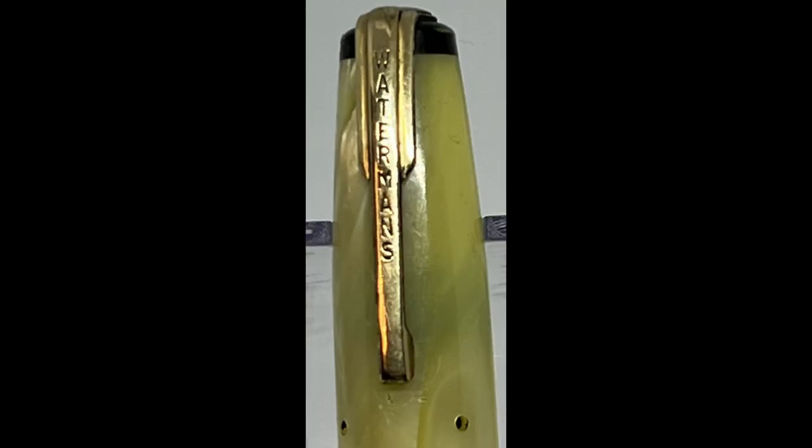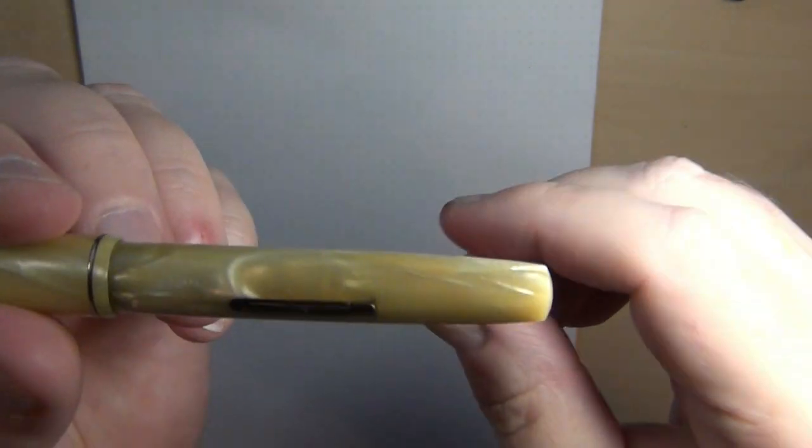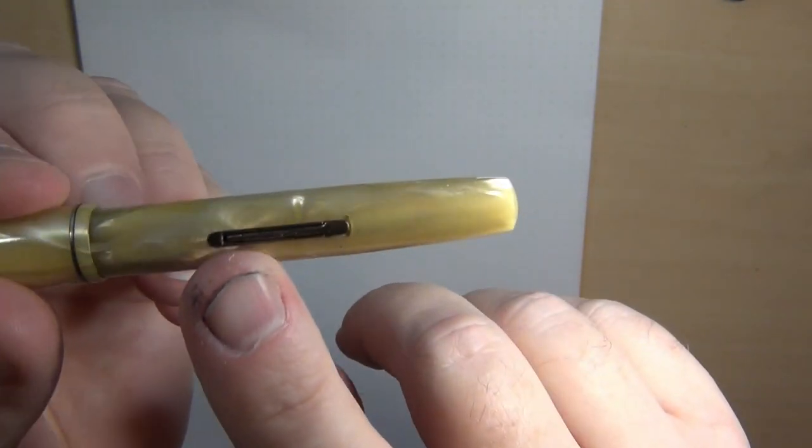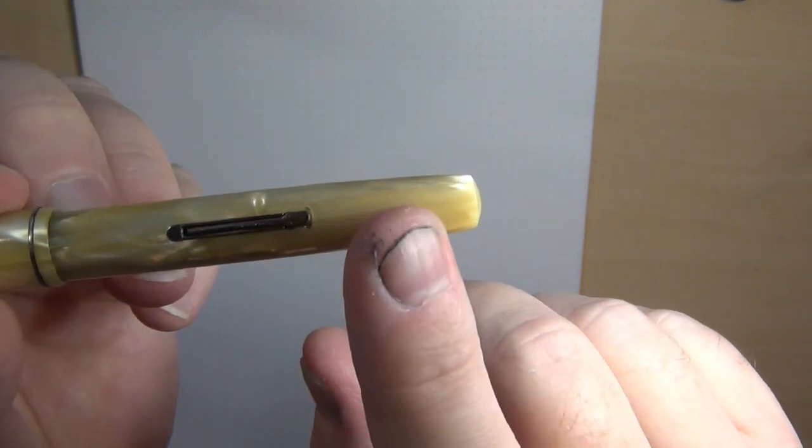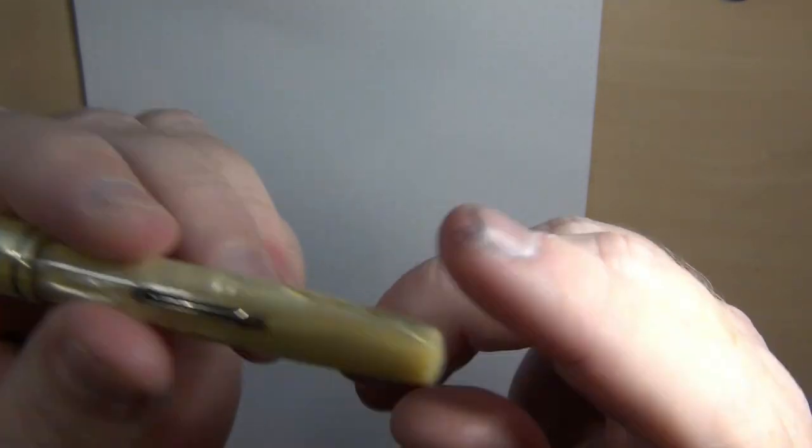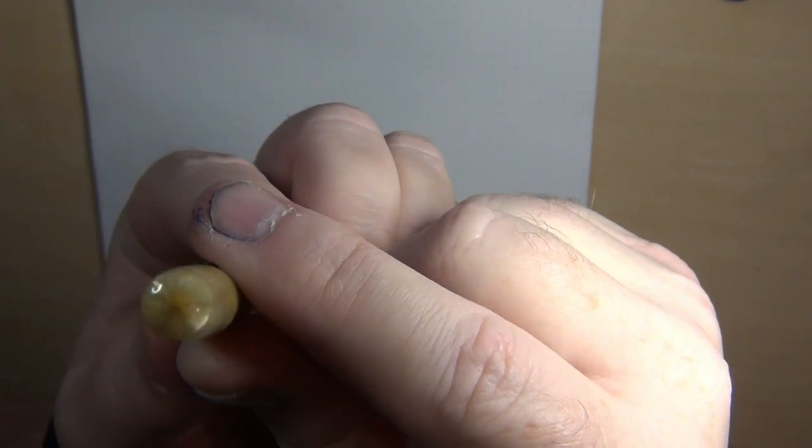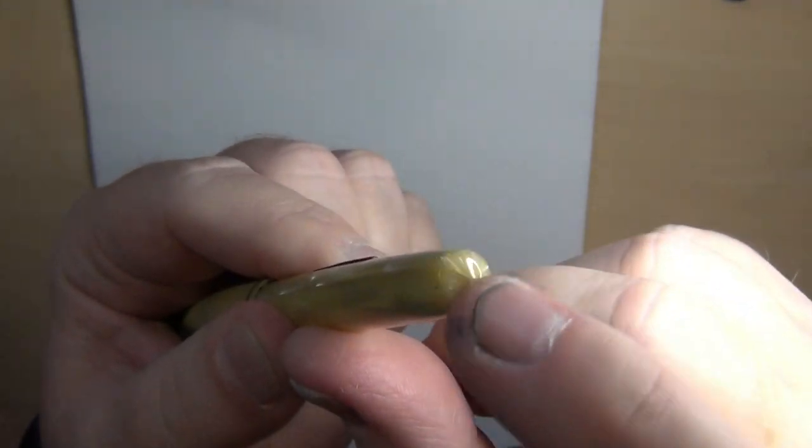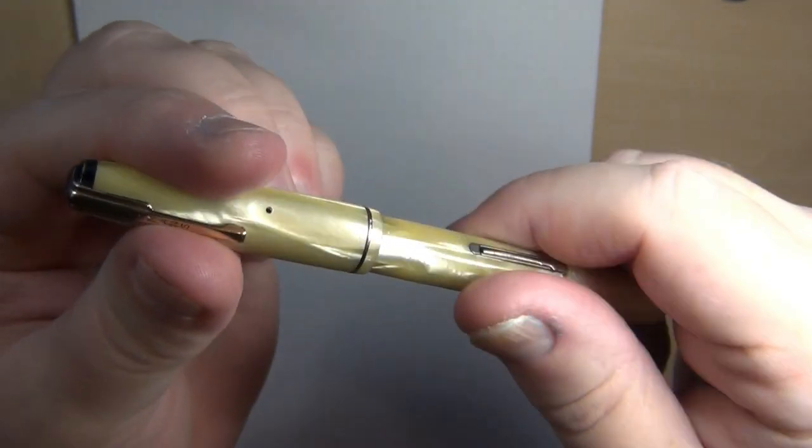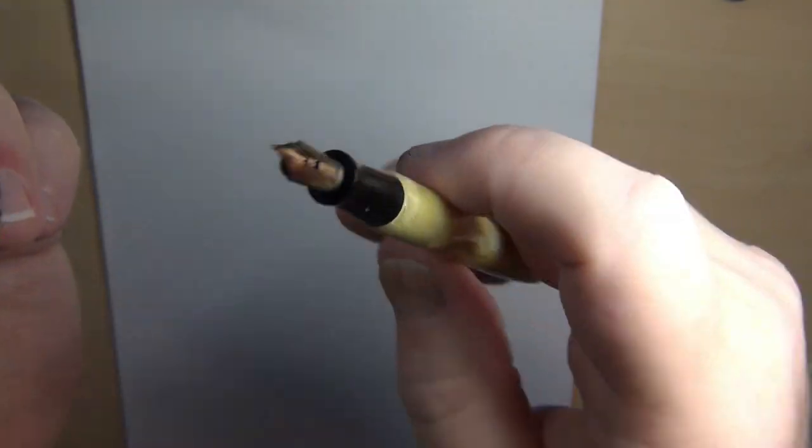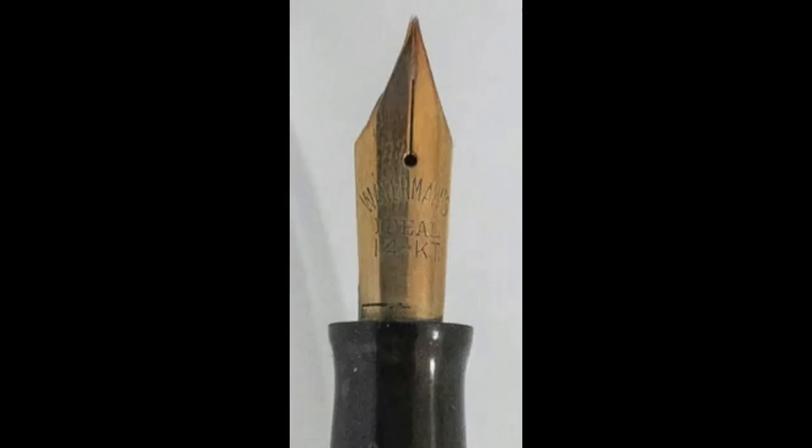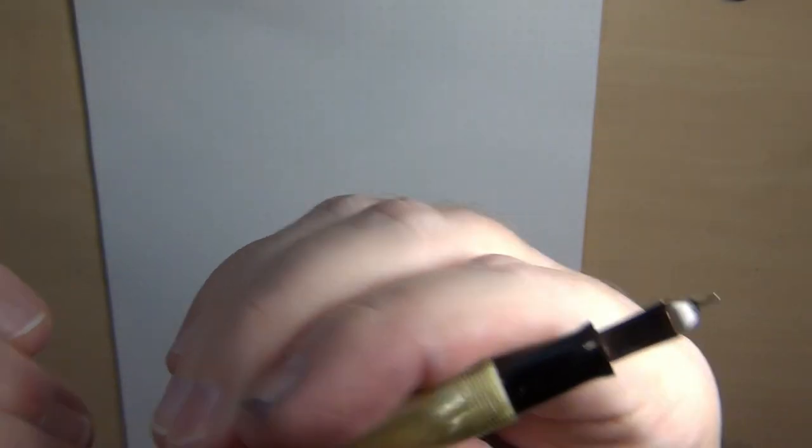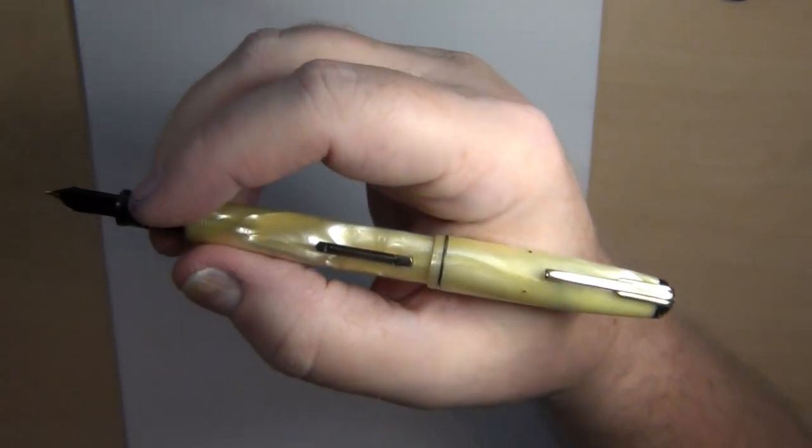And true to form, it does have the Waterman's name on the clip. It's got that single ring on that cap band. And obviously a lever filler from that time period, as would be normal. And then basically a somewhat rounded convex tip there. And twist cap, you open it up, and you've got a nice little number two Waterman nib on that thing. And yes, it's a very flexible nib. And this is just small enough where you're going to want to post it.